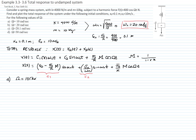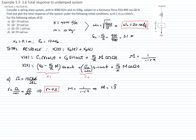For the first case, the forcing frequency is ω = 10 radians per second, which is less than the natural frequency. Therefore, the frequency ratio r = 10/20 = 0.5, which is less than 1. Substituting into the amplification factor 1/(1 − r²), we get a value of 1.3333.